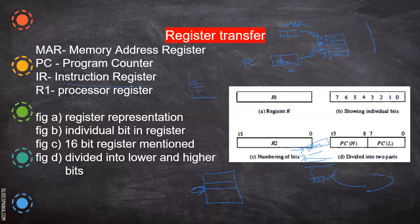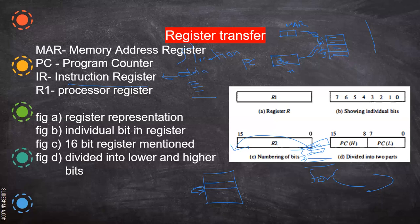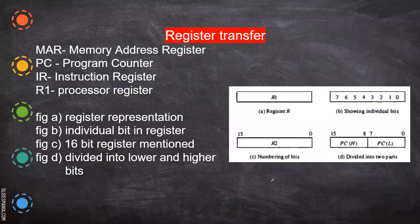Then there is the Instruction Register. The data taken from memory will be placed in the instruction register, where it will be decoded by the CPU to understand what it is — whether it is an addition, subtraction, or some logical operation. The CPU then executes whatever is specified. So the program counter and memory address register hold addresses, whereas the instruction register holds the actual data or instruction. After decoding, the processor register — normally called the accumulator — handles the result.